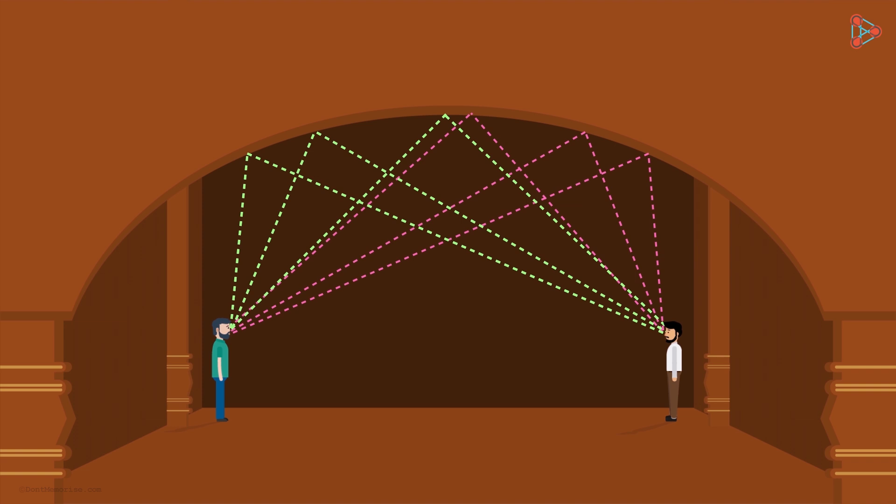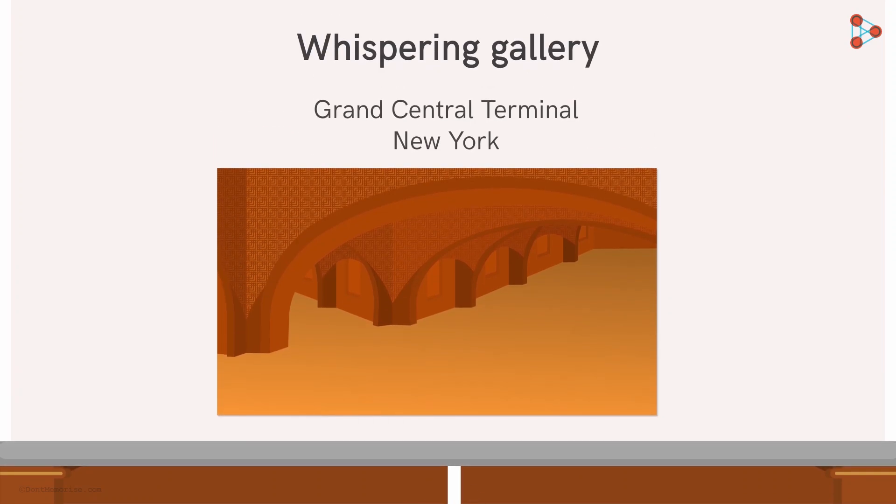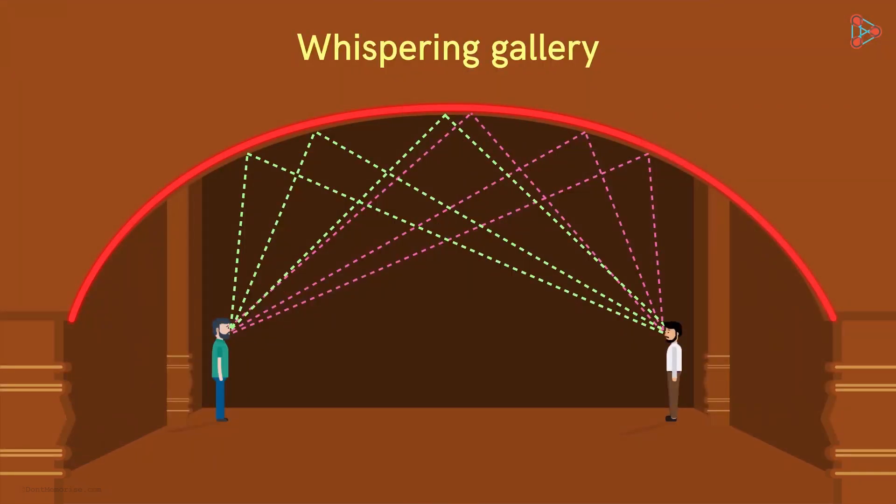Based on this reflective property of ellipse, many rooms called whispering galleries have been constructed. For example, there is one at the Grand Central Terminal in New York City. Isn't this shape interesting?